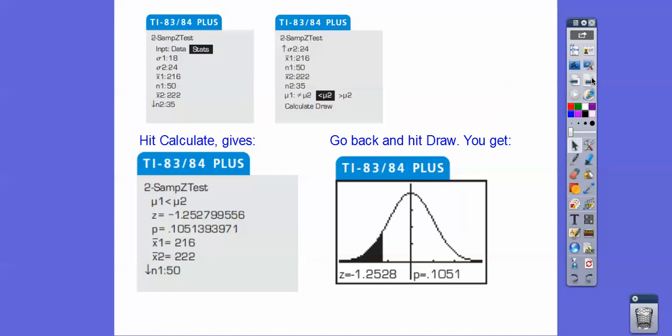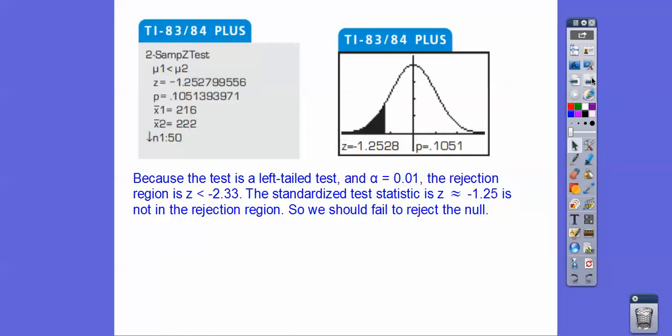If you hit draw, it'll give you that picture right there. Now, let's go ahead and make an interpretation because the test is a left-tailed test because it was less than. And at the 1%, the rejection region is z less than negative 2.33. So the standardized test statistic is negative 1.25 right there, and that's not in the rejection region, so we should fail to reject the null.